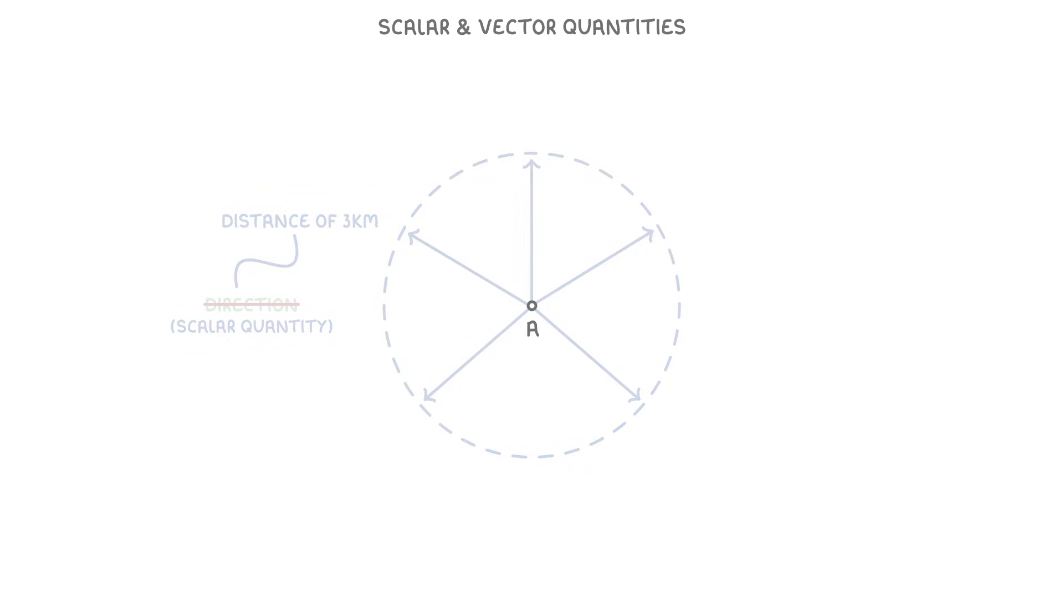However, if you'd started at A and then told us that you walked 3km east, we'd know exactly where you ended up, because you gave the exact displacement, which is a vector quantity, because it has both a magnitude of 3km and the direction of east.